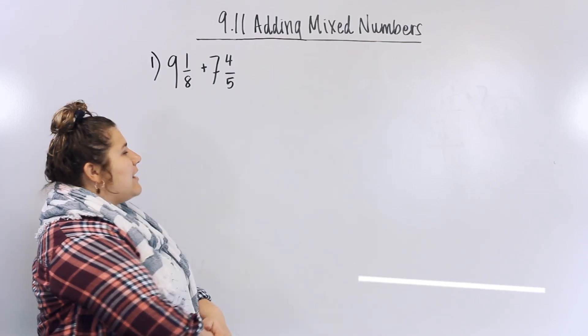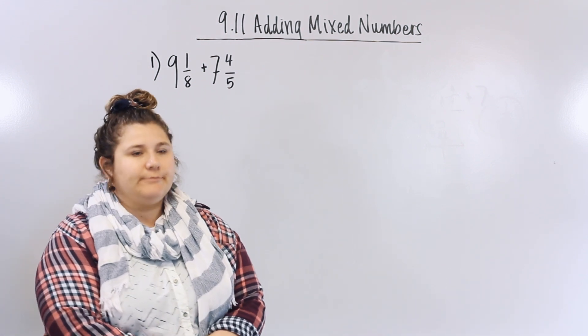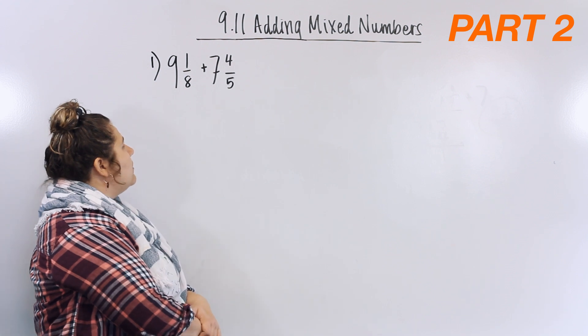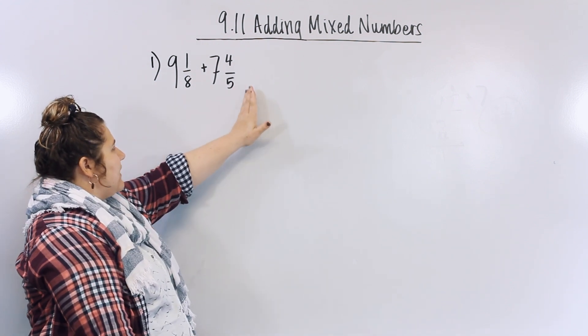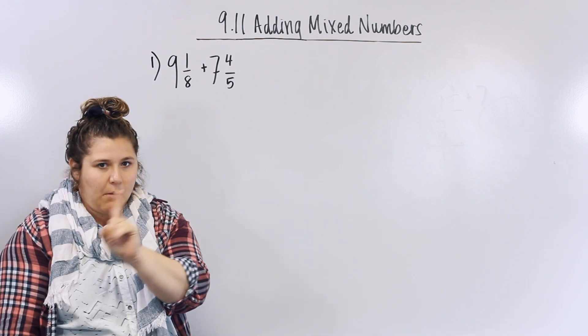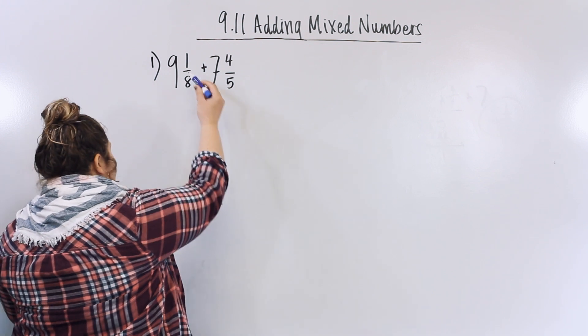Alright guys, so let's practice adding our mixed numbers. I have a problem on the board already: nine and one-eighth plus seven and four-fifths. So our first step is to find the common denominator, the bottom number, eight and five.